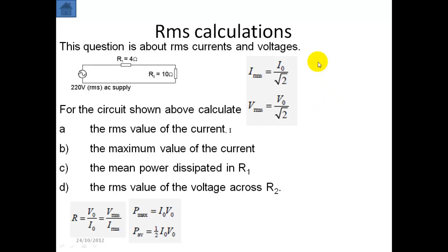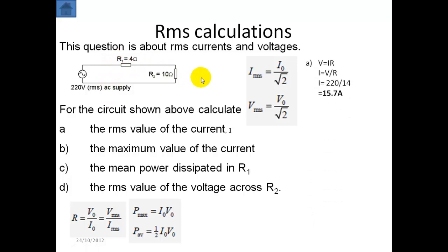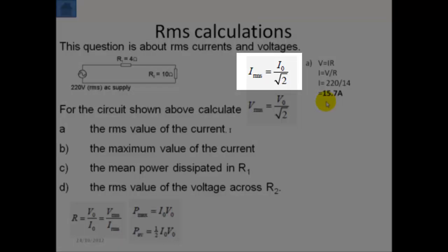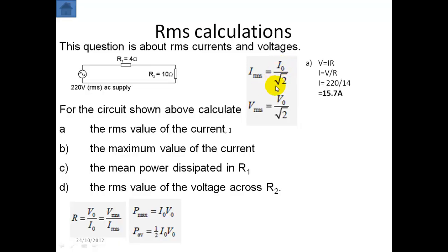These are taken exactly from the formula booklet. V₀ is the maximum voltage, or the peak voltage. So how do we find the RMS value of the current? Well, V equals IR. We already know the RMS value for the voltage. To find the current, we know the resistance. This gives a current of 14.7 amps. The maximum value of the current is going to be greater than this — this is the RMS value for the current. So we basically just need to multiply by √2 to scale it up by a factor of √2. I₀ is equal to √2 times I_rms. So we multiply by √2.